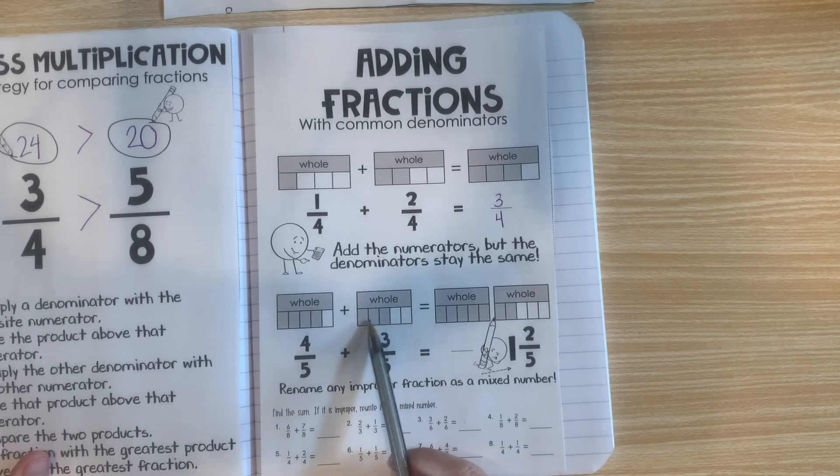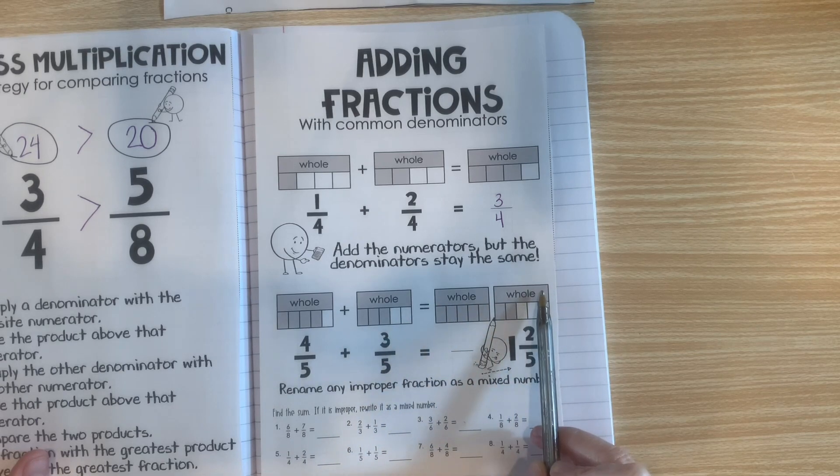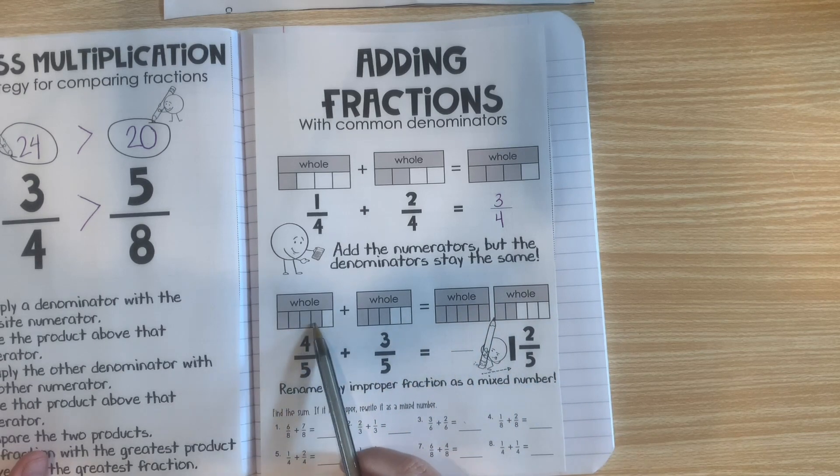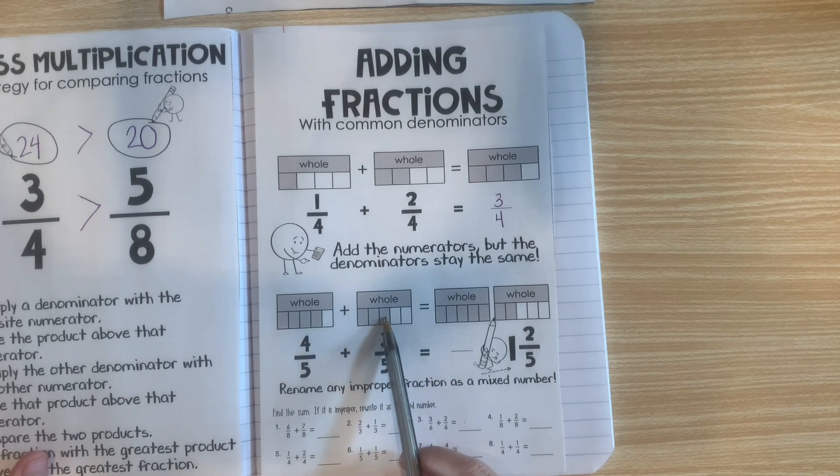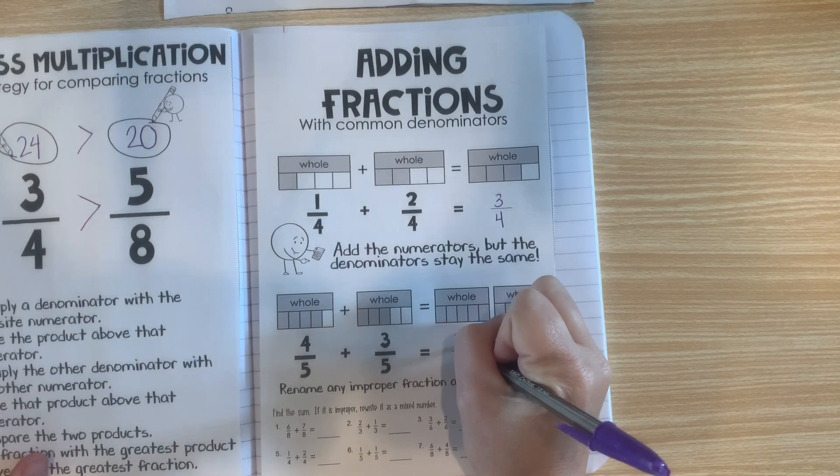Notice when we do that, we're going to get more than one whole. And that's because 4 and 3 more make 7. So, if we add our numerators, we get 7.